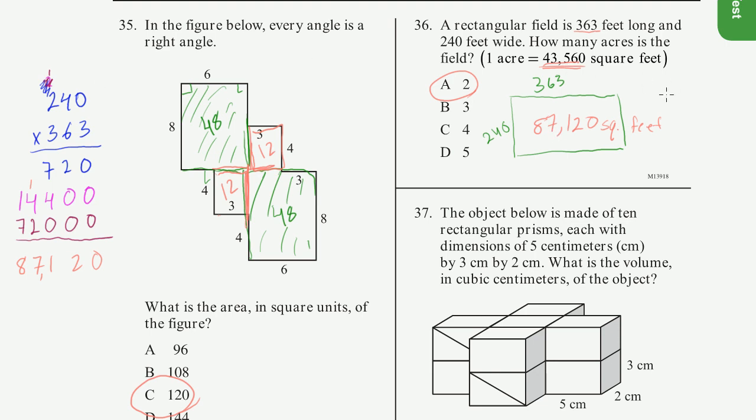And if you wanted to verify it, let me do it in a color you can see. So 43,560 times 2. 2 times 0 is 0, 2 times 6 is 12, 2 times 5 is 10 plus 1 is 11, 2 times 3 is 6 plus 1 is 7, 2 times 4 is 8. And we've got the exact number, which was the square footage of the field. So it's 2 acres.